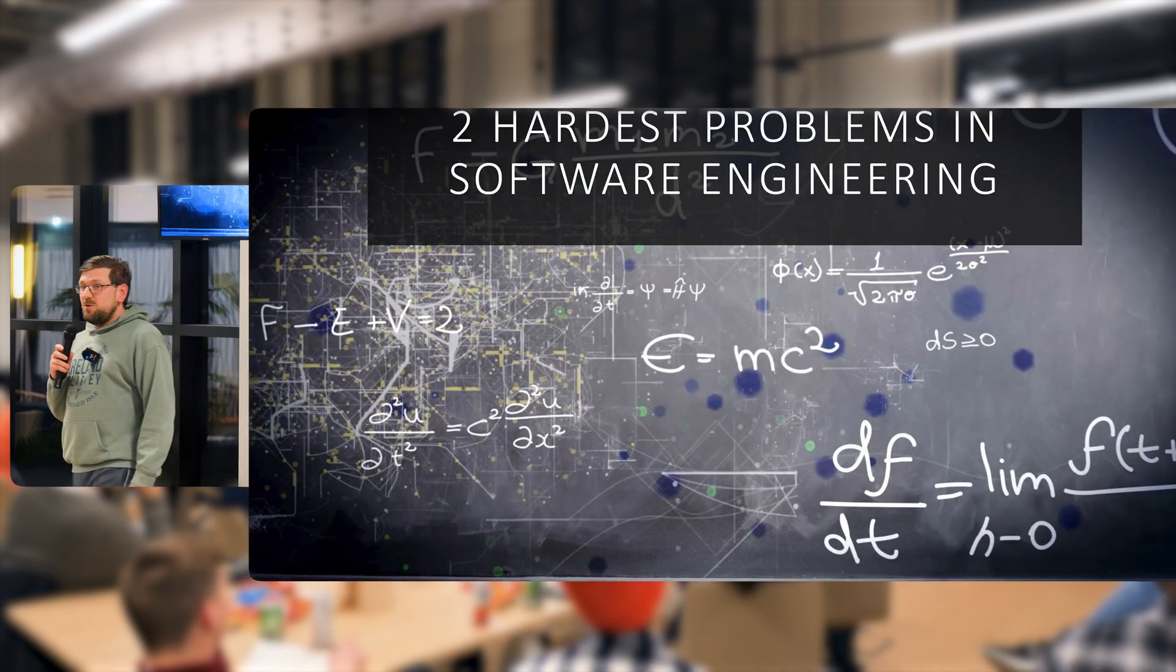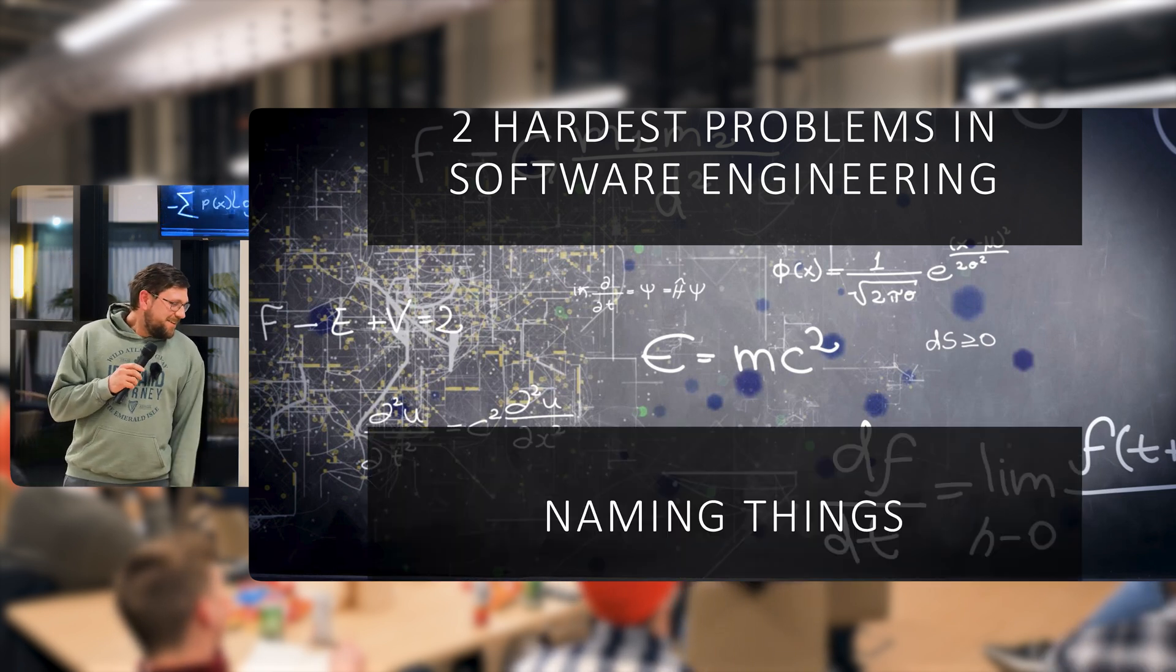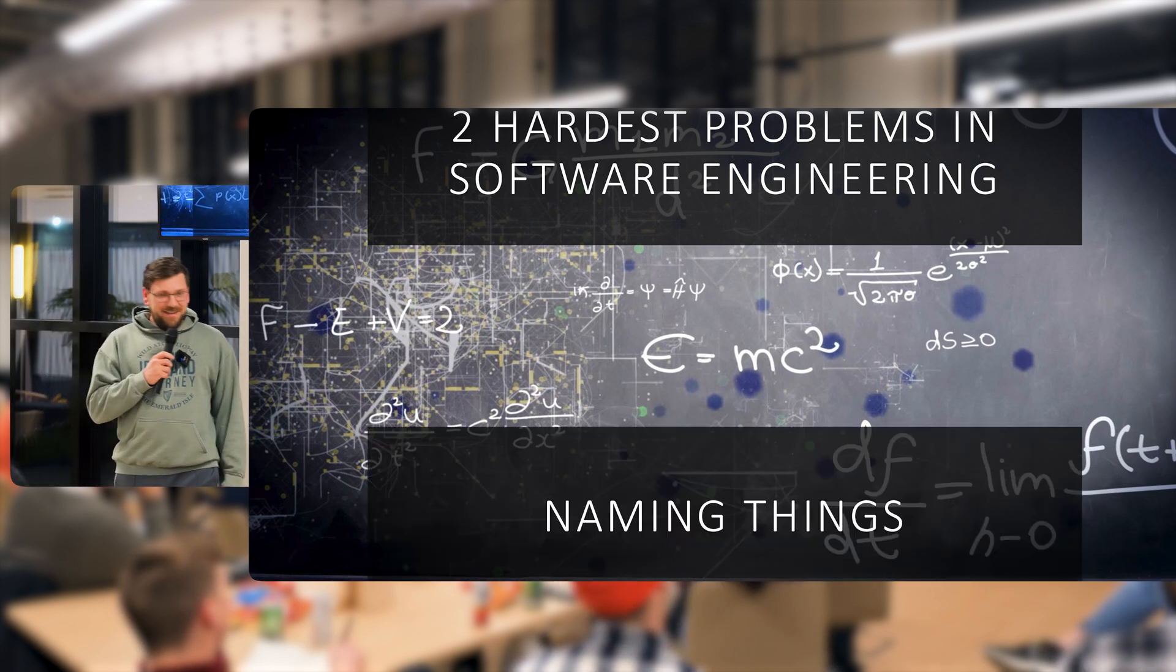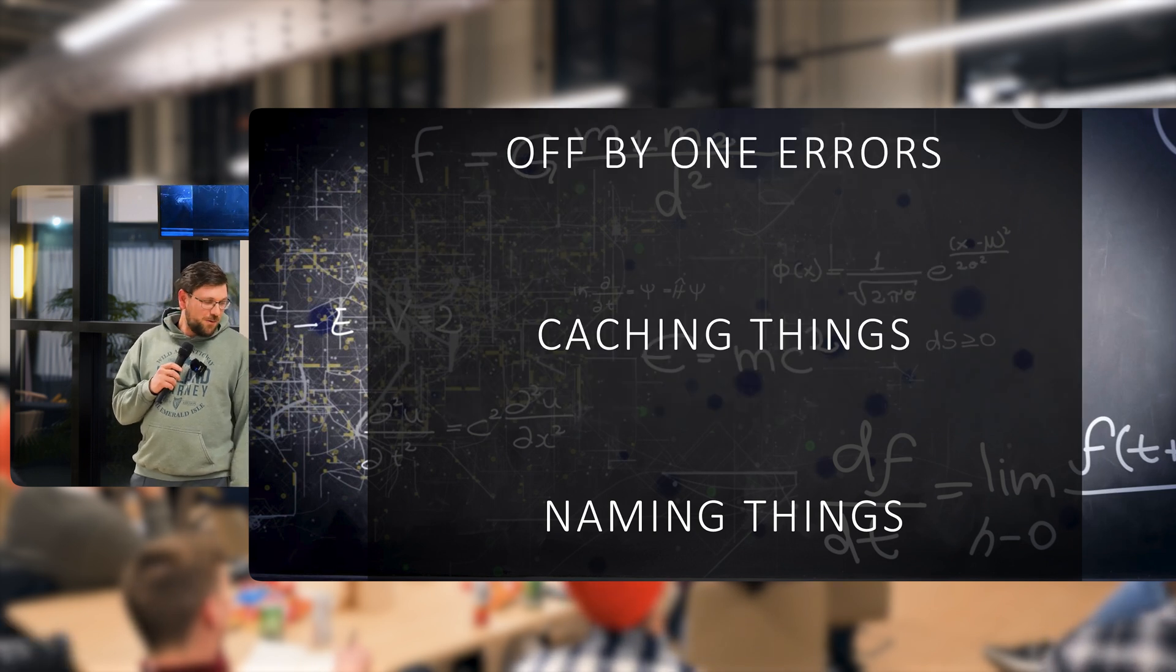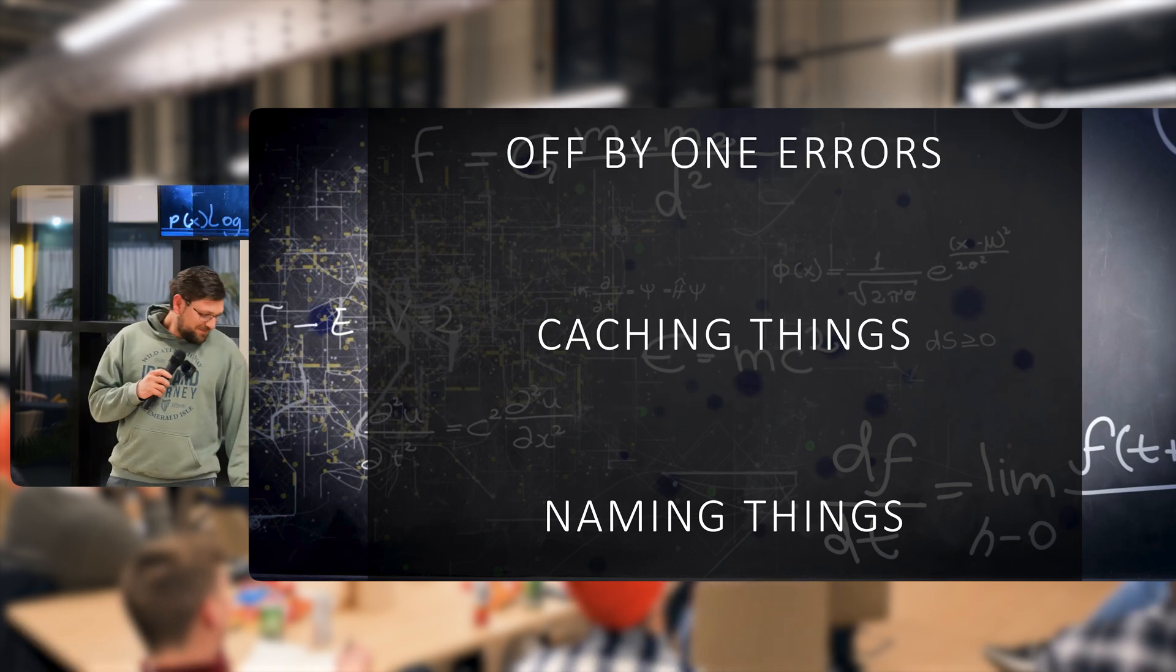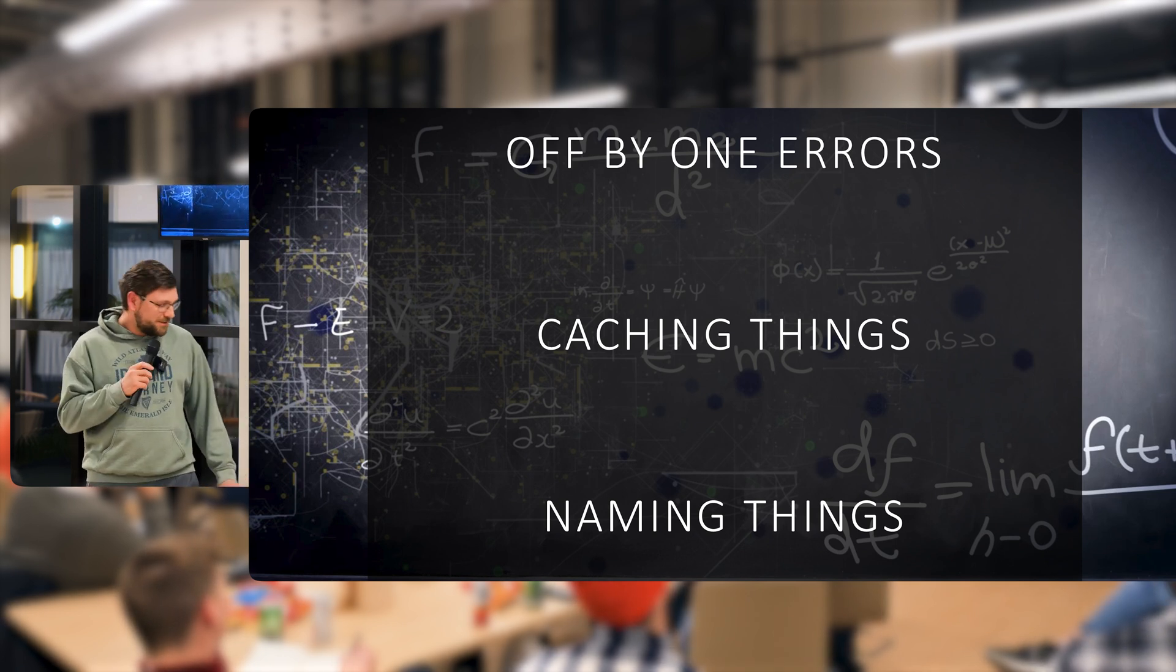So that brings us to the two hardest problems in software engineering. Naming things. Caching things. And off by one errors. We're only going to be talking about caching things. I really can't help you with the others.